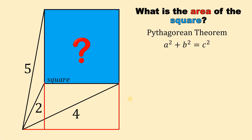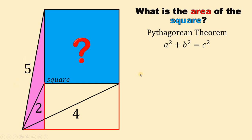From here, notice that we created three right triangles. Here's the first one having a hypotenuse of 4, the other one having a hypotenuse of 5 units, and the third one having a hypotenuse of 5 units. In order to use the Pythagorean theorem, let's name some important sides. The side of the square, let's call this x. This side right here, let's call this a. And this side right here, let's call this b.